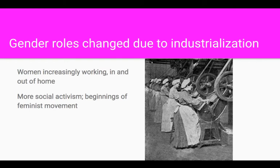As women increasingly worked in factories, that changed gender roles and led to the beginnings of the feminist movement — it's one of the causes of feminism. Another big cause in the 19th century was the abolitionist movement. Many women were involved in the movement to abolish slavery and took the same principles upon which that movement was based and applied them to gender roles.